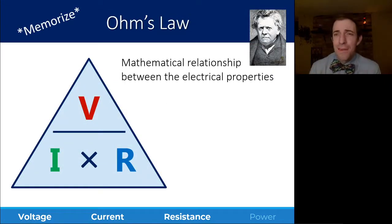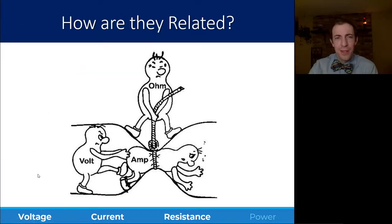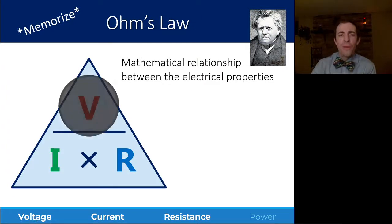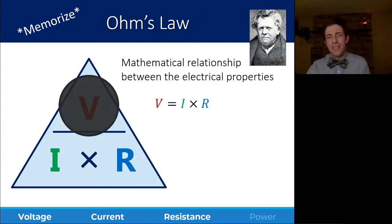Now, mathematically, this relationship is known as Ohm's Law. And it's often displayed in this triangle. I don't love the triangle, but it's pretty common. So, I want to show you just what it looks like and why people would depict it this way. Ohm's Law is basically voltage is current times resistance. That's the relationship between volts, amps, and ohms.